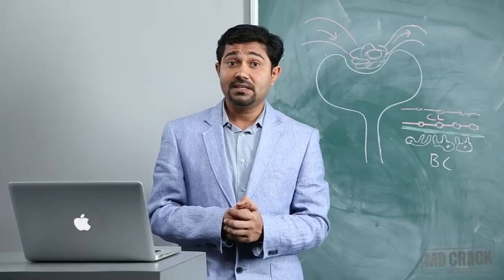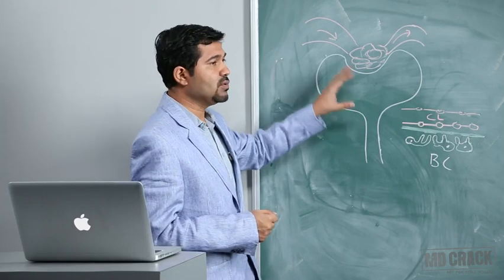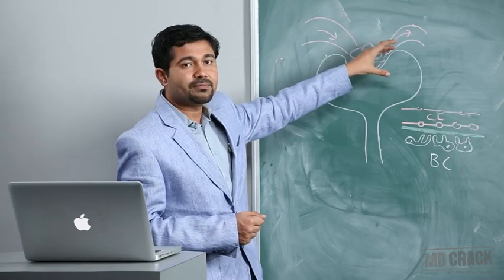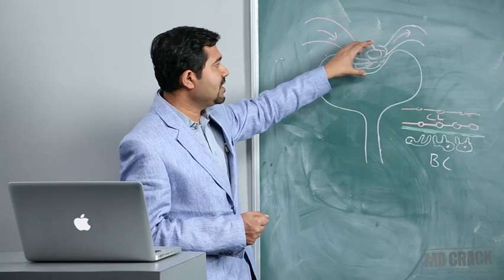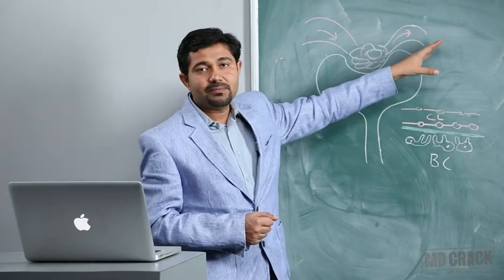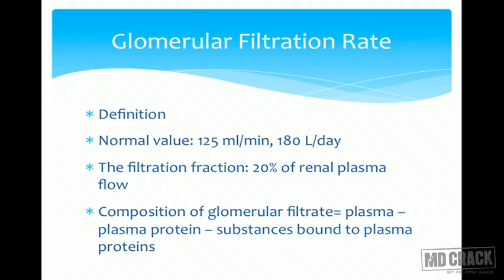Normally, if 100 ml of plasma is flowing per minute, 20 ml will be filtered and 80 ml will pass onward. This is called the filtration fraction, which equals the amount of filtrate formed divided by the renal plasma flow - not blood flow, but renal plasma flow. That is about 20%.